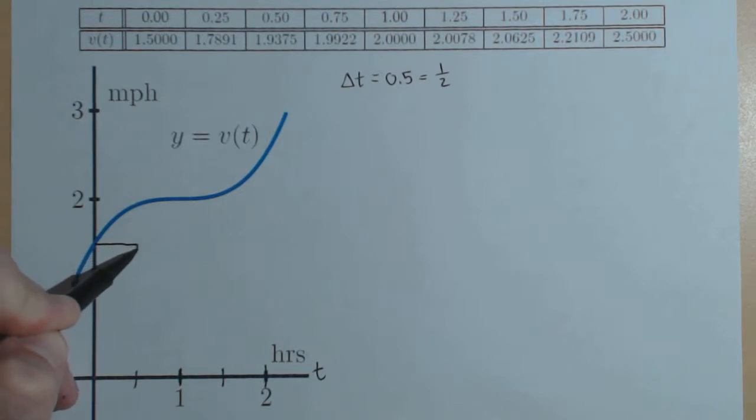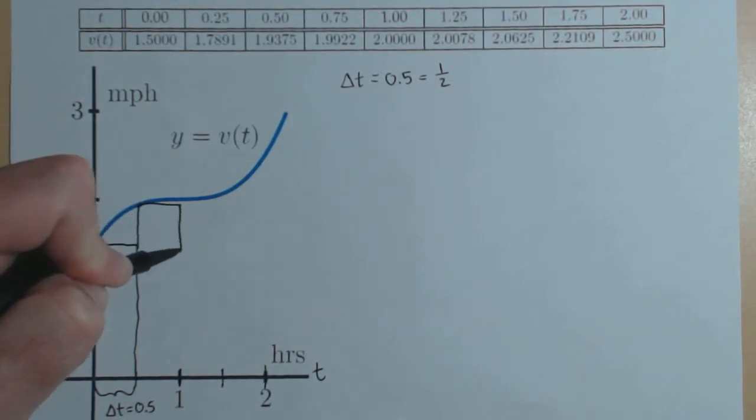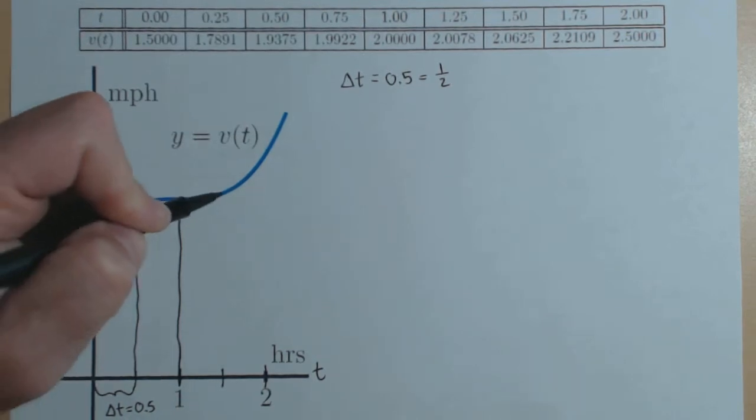I'm going to draw a rectangle here. All of them will have the same width, that's our delta t equals 0.5. I'm going to draw another one up to the function and then across until I hit 1.